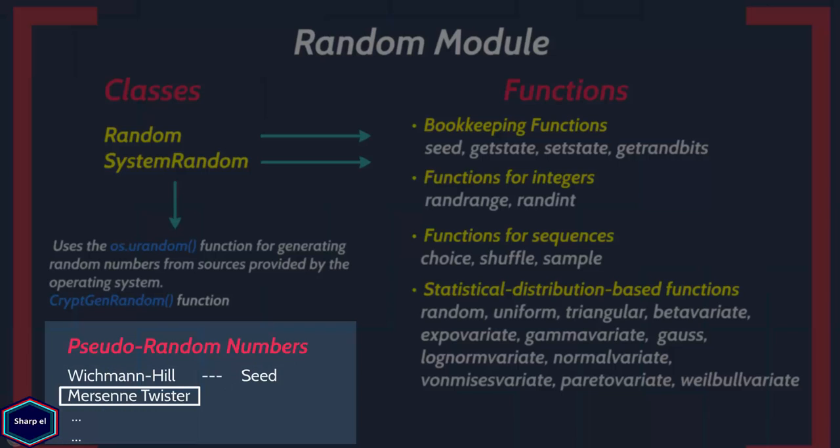Python 3 uses Mersenne Twister as its core random number generator, which generates pseudo-random numbers with nearly uniform distribution, making them suited for a wide range of applications such as simulation and modeling.